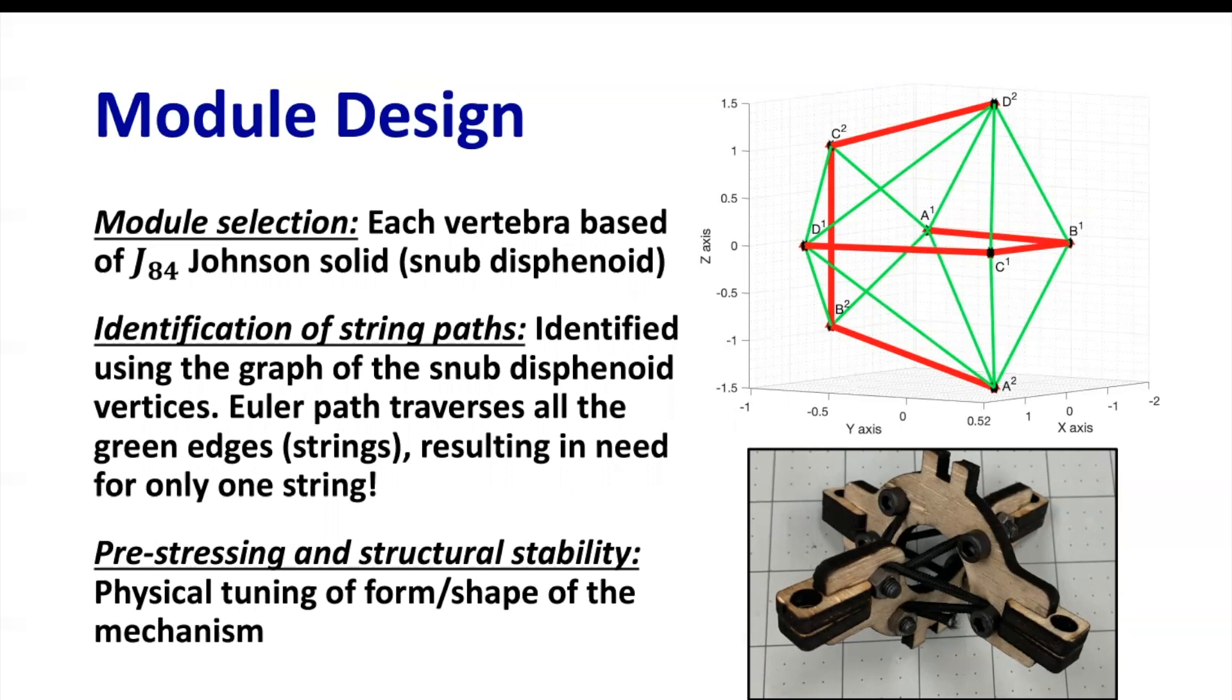In the case of Dexter, the J84 Johnson solid, also known as the snub disphenoid, was used. The next step is to identify the string paths, which are found using the graph of the vertices of the snub disphenoid. For this design, there is an Euler path that traverses all the green edges or strings, resulting in only one string being needed to complete the structure.